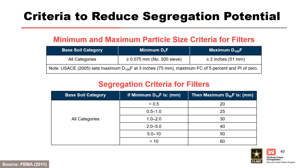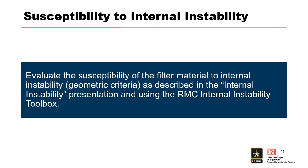This slide shows criteria to reduce the potential for segregation. The upper table provides minimum and maximum particle sizes for filters, and the bottom table provides the filter design criteria to limit the maximum allowable D90 of the filter based on the minimum D10 of the filter. When assessing an existing filter that may be prone to segregation, evaluate the susceptibility of the filter material to the geometric criteria of internal instability as described in the internal instability presentation using the RMC Internal Instability Toolbox.